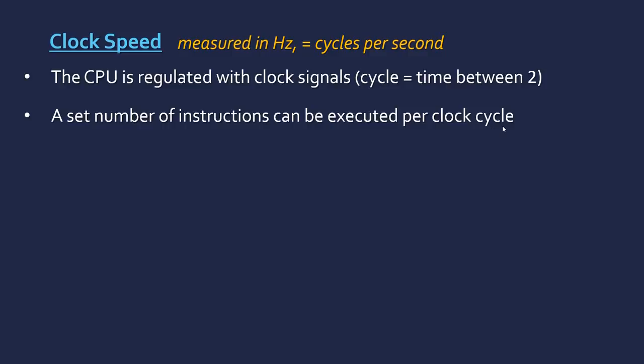We talked about the fetch-execute cycle, which is the actual cycle it goes through per instruction — that's different to a clock cycle. If you were only executing one instruction per clock cycle, they'd be the same in terms of length, but they're not necessarily, so they are different — watch out for that. It's also called a clock tick, which is the same thing as a clock cycle. The clock speed is the same as the clock rate, which is measured in hertz.